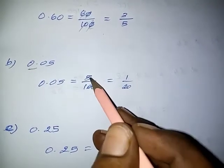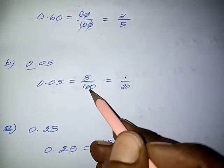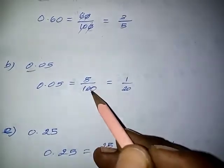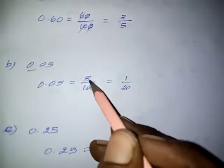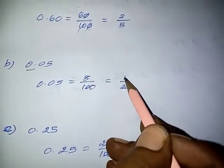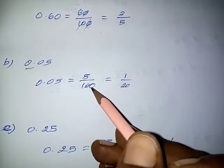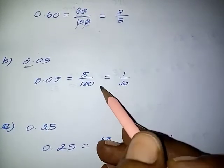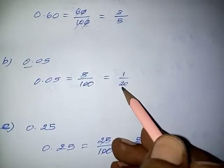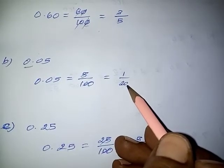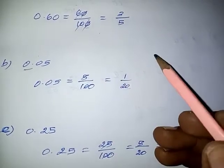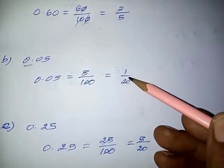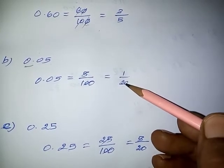Now, 5 and 100 can be divided by the 5 times table. We cancel using the 5 table: 1 five is 5 in the numerator, and 20 fives are 100 in the denominator. So the required fraction of the given decimal is 1 by 20.